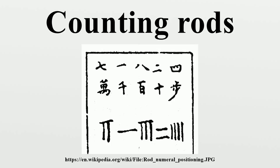Counting rods were used by ancient Chinese for more than 2,000 years. In 1954, 40-odd counting rods of the Warring States period were found in Zuo Diagongshan Chu grave number 15 in Changsha, Hunan. In 1973, archaeologists unearthed a number of wood scripts from a Han dynasty tomb in Hubei. On one of the wooden scripts was written one of the earliest examples of using counting rod numerals in writing.